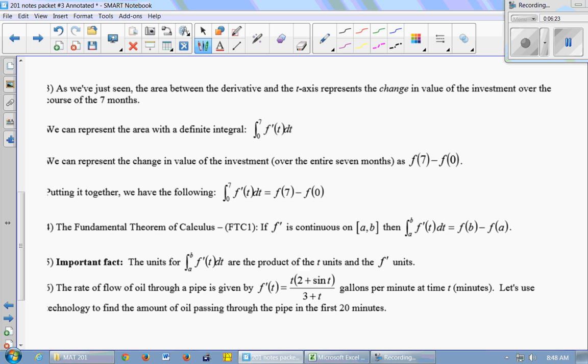We could also represent the change in value of the investment over the course of seven months by just taking the value at 7 and the value at 0 and subtracting. So putting those two things together, the integral from 0 to 7 of f'(t)dt is the same thing as f(7) - f(0), the total change in the investment over seven months.